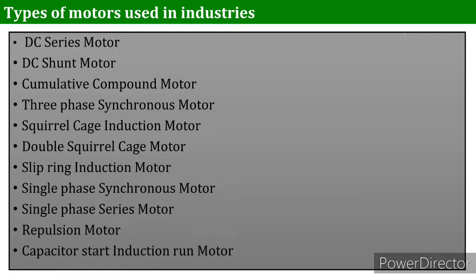The third type is the cumulative compound motor, which is a varying-speed motor with high starting torque. It is used for grabbing compressors, variable head centrifugal pumps, circular saws, and continuous conveyors — which are very important in industry to move products from one station to another.